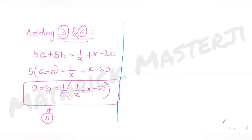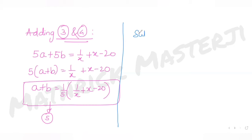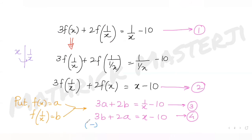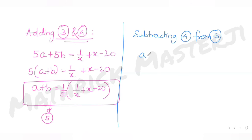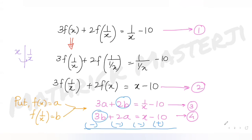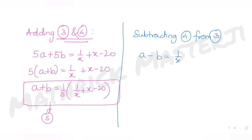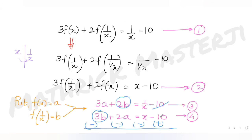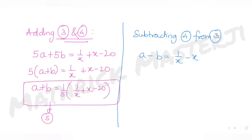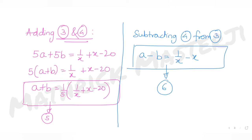Now subtracting equation 4 from equation 3: 3a - 2a = a, and 2b - 3b = -b, giving us a - b = 1/x - x. The -10 and +10 cancel out. Let's call this equation 6.